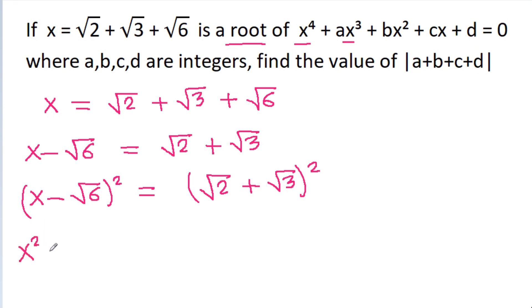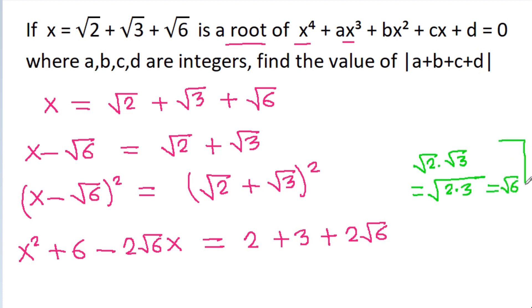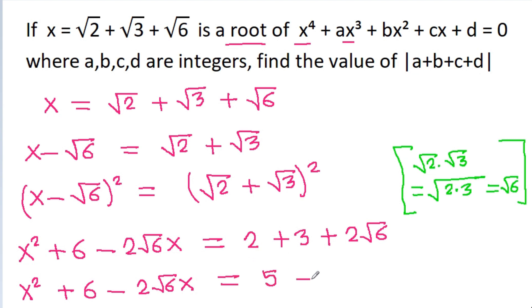Expanding: x² + 6 - 2√6·x = 2 + 3 + 2√6, because √2 × √3 = √6. So x² + 6 - 2√6·x = 5 + 2√6.